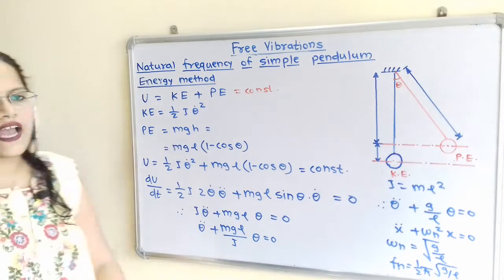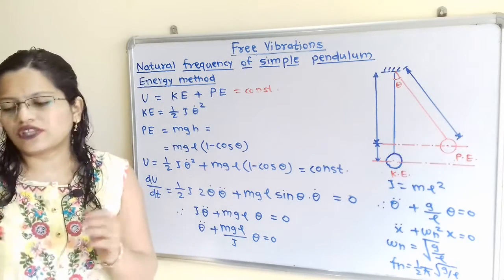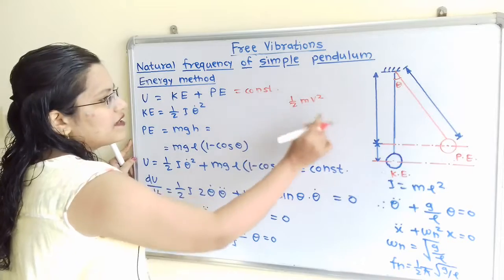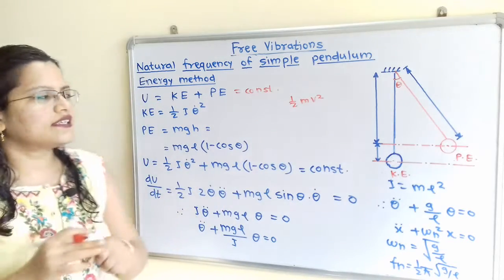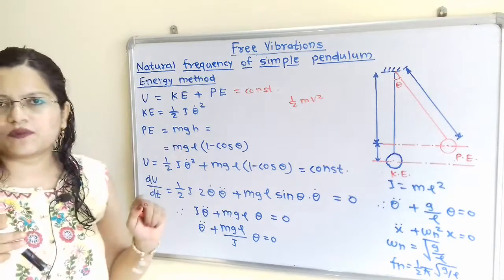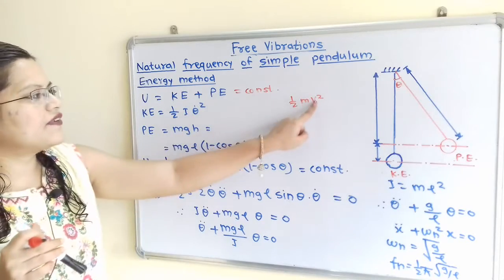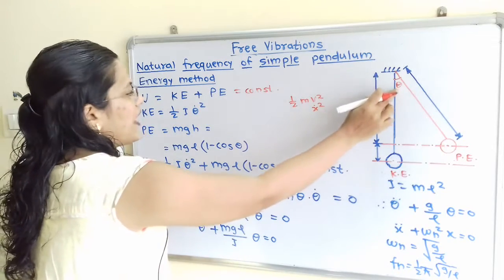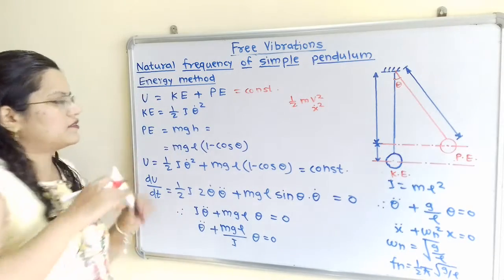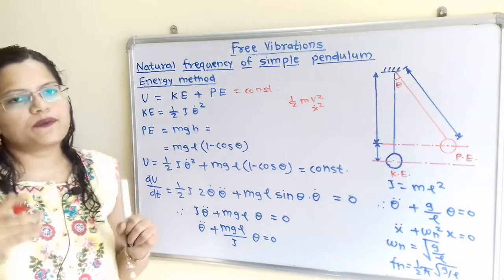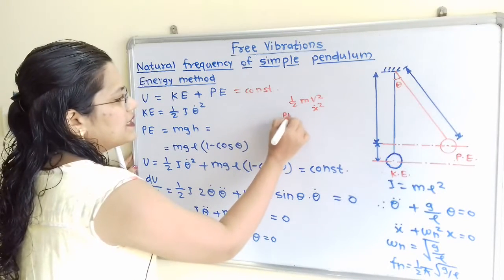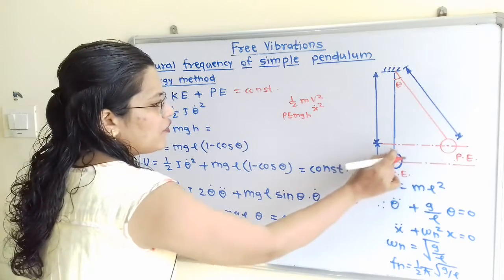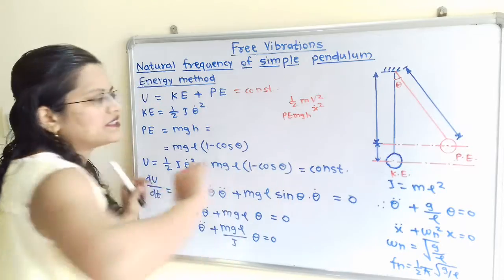For kinetic energy in a linear system, KE equals one-half M v squared. Here, because we have angular displacement theta, instead of mass we use the mass moment of inertia I, and instead of v squared we write theta-dot squared. So kinetic energy equals one-half I theta-dot squared. For potential energy, PE equals Mgh, where h is the height through which the bob is displaced.